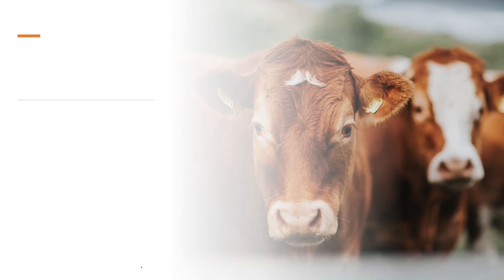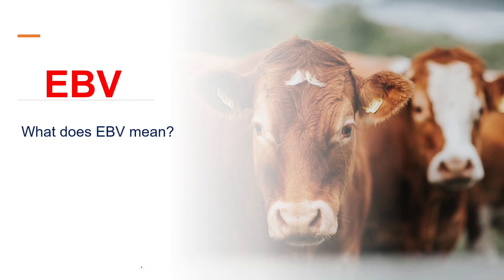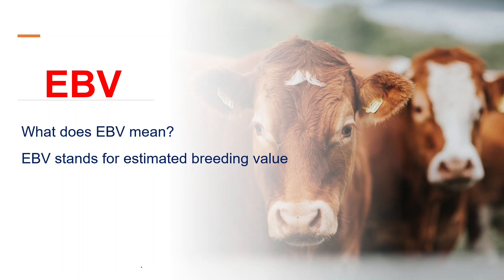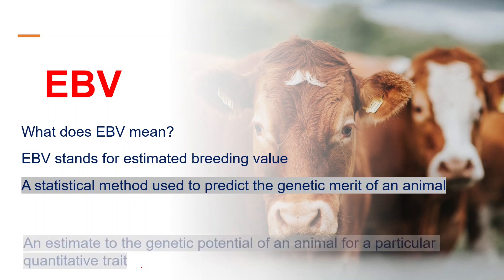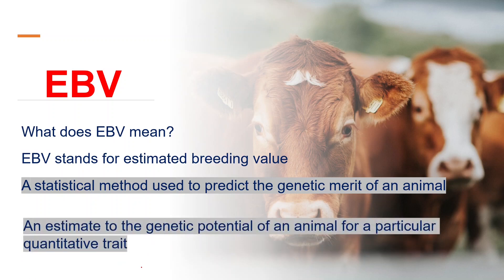In animal breeding, you often hear about the term EBV. EBV stands for the estimated breeding value. EBV is a statistical method used to predict the genetic merit of an animal. Estimated breeding values give an estimate of the genetic potential of an animal for a particular quantitative trait.